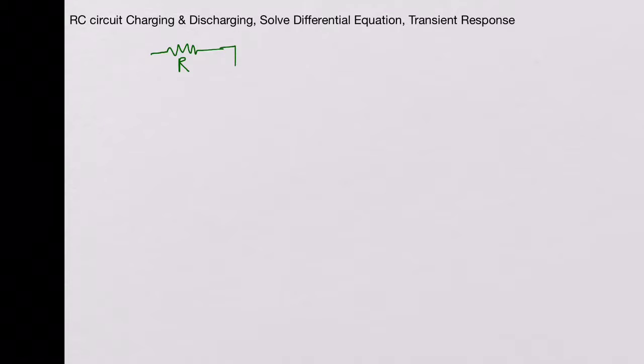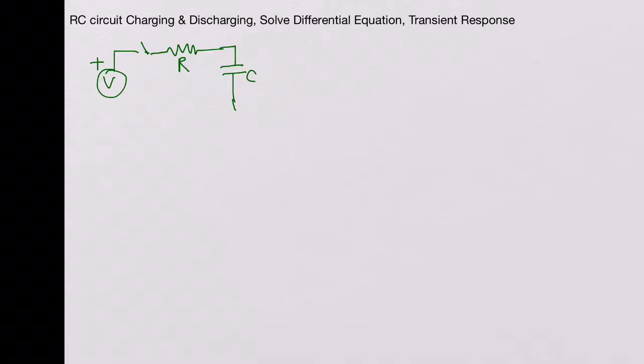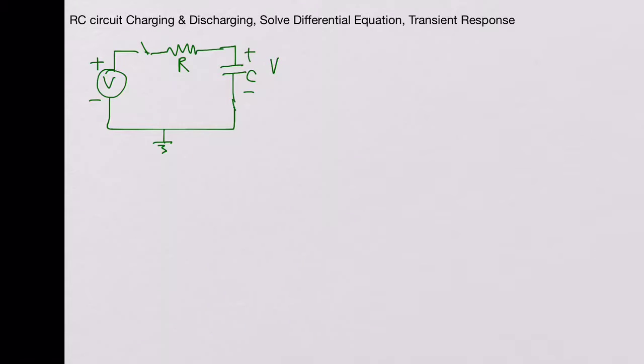Welcome to EE Know-How. In this video we will look at discharging of the RC circuit that has already been charged. In another video we looked at connecting an RC circuit and closing the switch to a DC voltage source V, and saw that the capacitor charges up so the voltage across the capacitor becomes V and there is no current flowing through it.